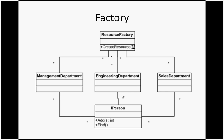I am taking the same example and making it as a C# component. Here, the person is the common element — an employee, engineer, salesperson, or manager is basically a person. The IPerson interface is what I have. This IPerson interface is going to be implemented by the management department, engineering department, and sales department classes. All three objects implement IPerson — that is the common thing.